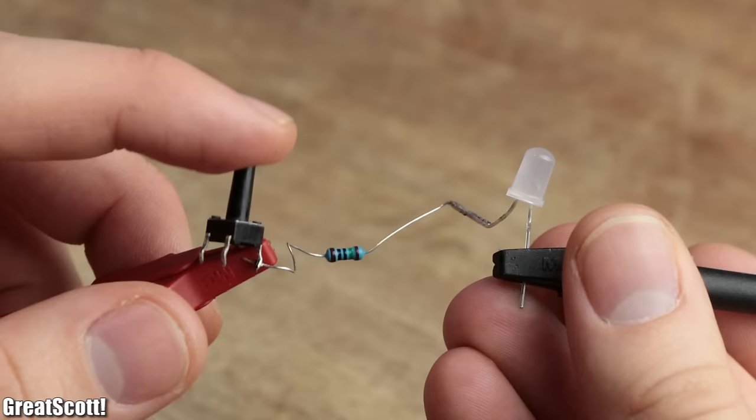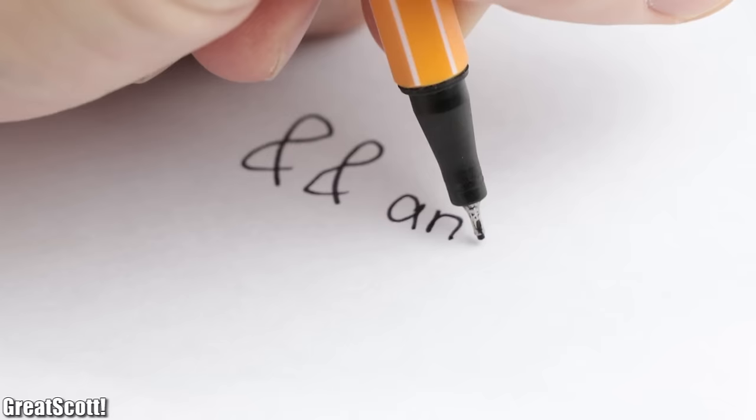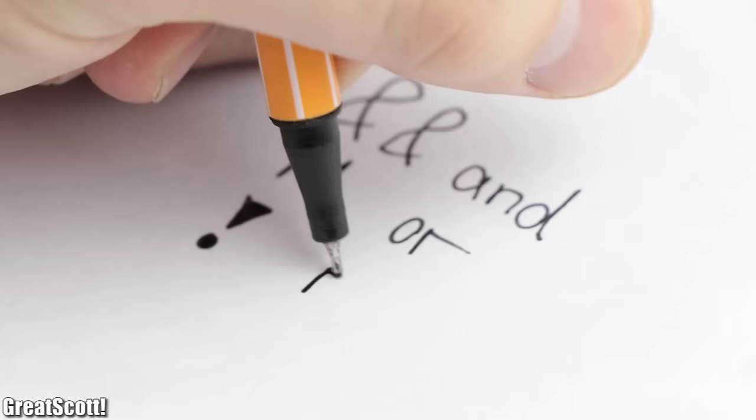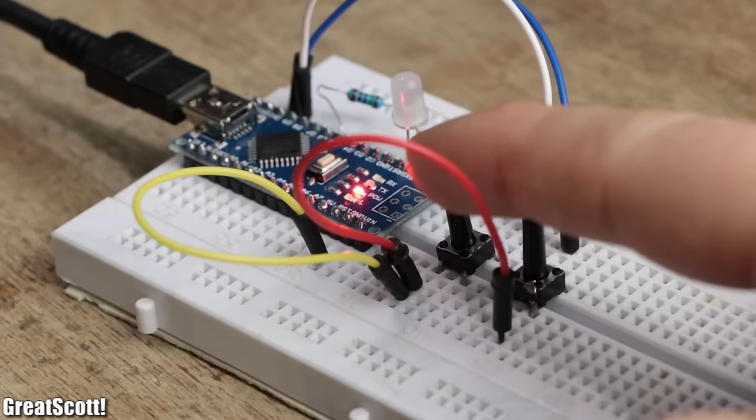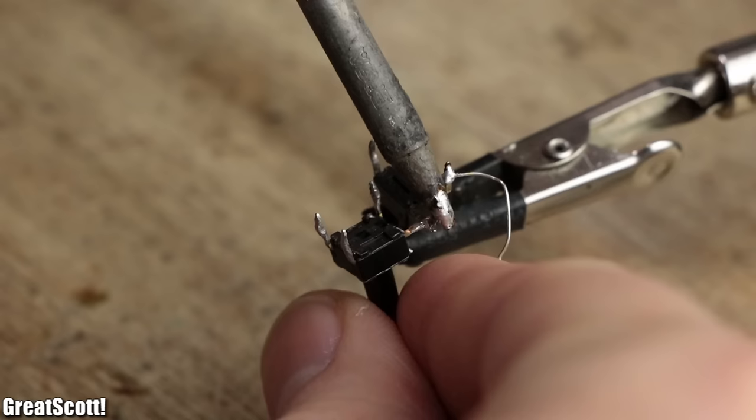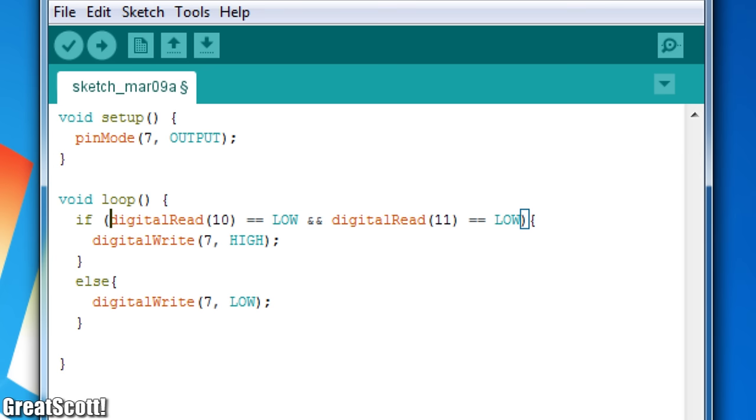But at this point you might say we don't need a microcontroller for that, and you would be absolutely correct. But if we go one step further and include boolean operators, it gets a bit more complex. In this case, the double ampersand represents the logical AND, and there also exists the double vertical bar for the logical OR and the exclamation mark for the logical NOT. So this time after uploading the code, the LED only lights up if pin 10 and 11 is connected to ground. But once again you could say, well I'll just take two switching parts in series to build the circuit without a microcontroller, and once again you would be absolutely correct.